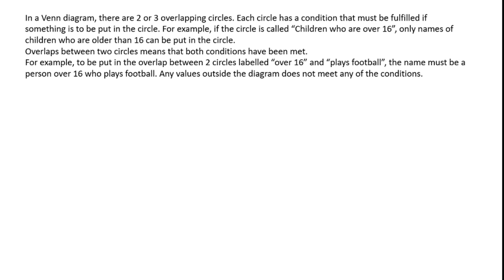In a Venn diagram, there are two or three overlapping circles. Each circle has a condition that must be fulfilled if something is to be put in the circle. For example, if the circle is called 'children who are over 16', only names of children who are over the age of 16 can be put in the circle. Overlaps between the two circles means that both conditions of both circles have been met. For example, to be put in the overlap between two circles labelled 'over 16' and 'plays football', the name must be of a person who is older than 16 and who plays football. Any values outside of the diagram do not meet any of the conditions of any of the circles.